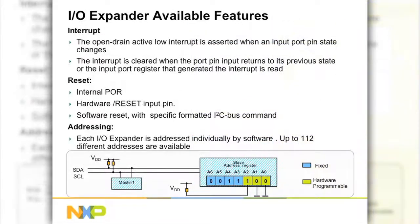GPIO expanders may also have an interrupt pin that is asserted low when an external change in an I/O pin is detected. For totem pole devices, the port pin must have been configured as an input, and for devices that are interrupt-maskable, the port must not be masked.